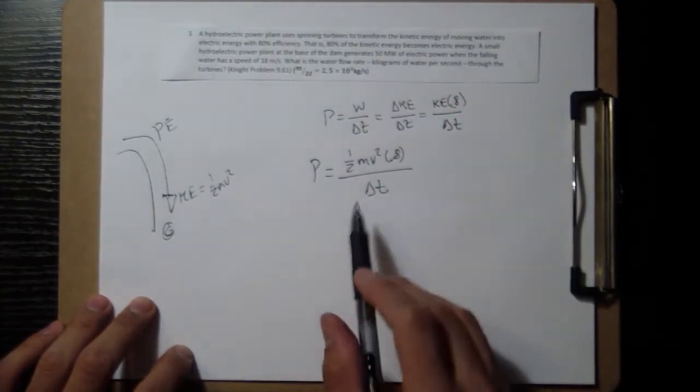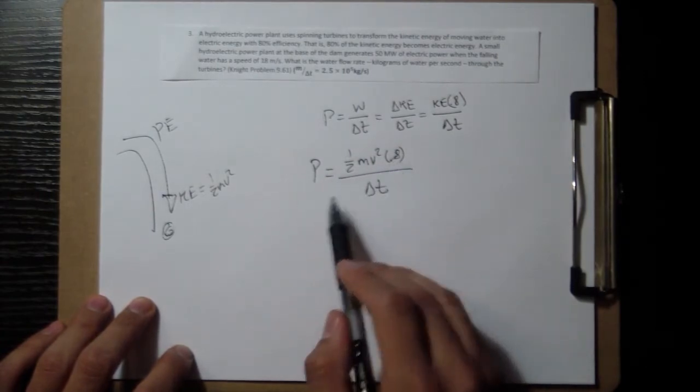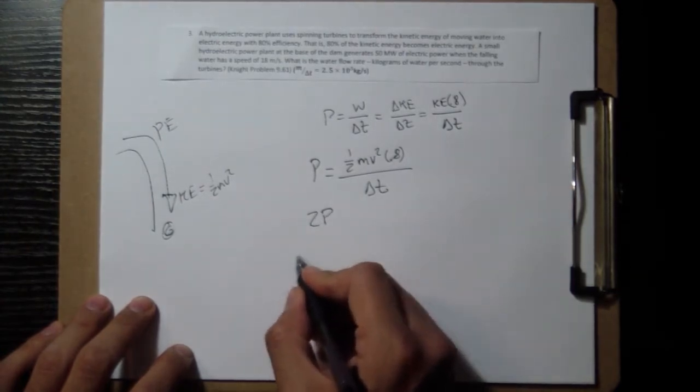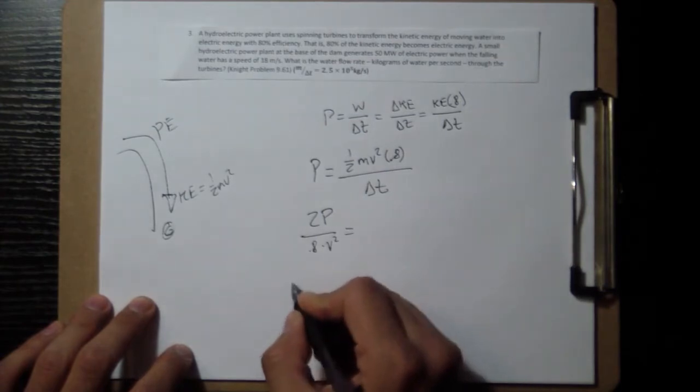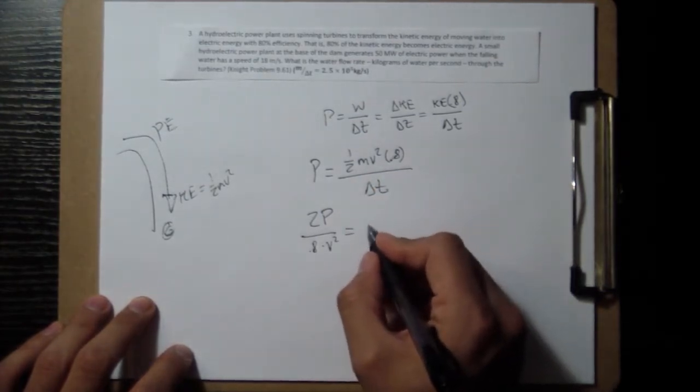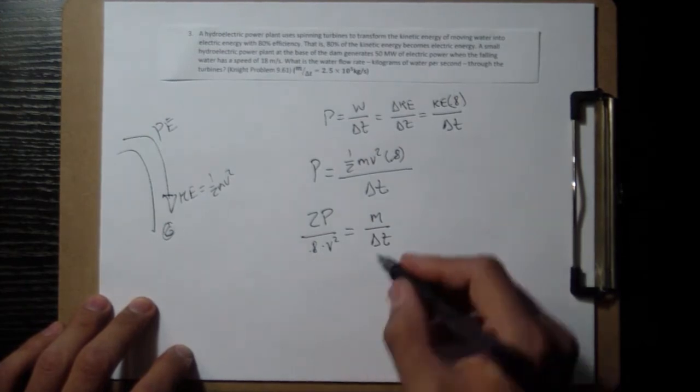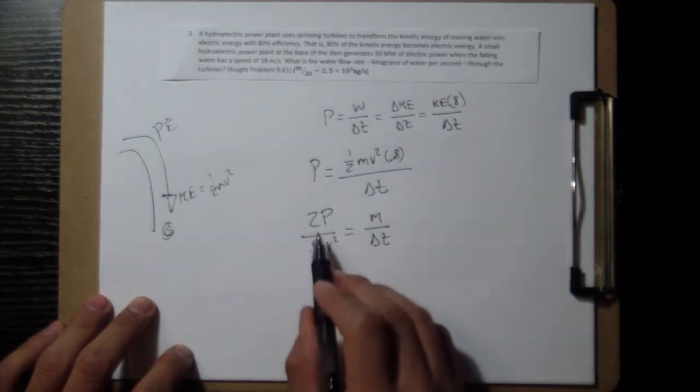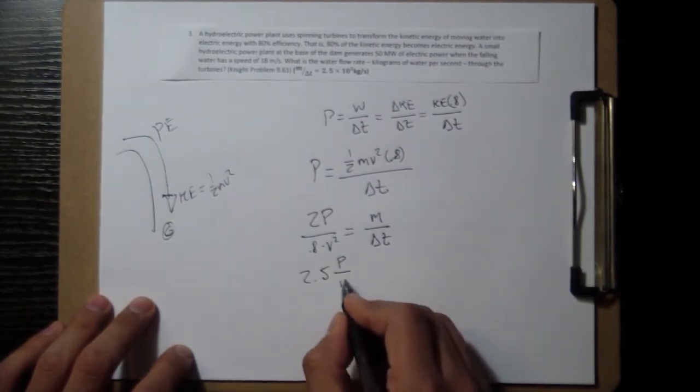So we want to isolate that fraction m over delta t. To do that, we're going to multiply by 2 on both sides, divide by 0.8, and divide by v squared. So 2 times p over 0.8 times v squared. That's going to cancel everything out over here and leave us with m over delta t. And this is what we want, so we're just going to figure out what this is. And 2 over 0.8 is 2.5 p over v squared.